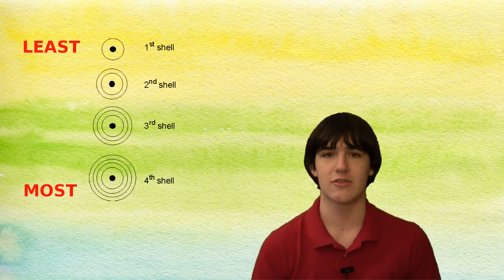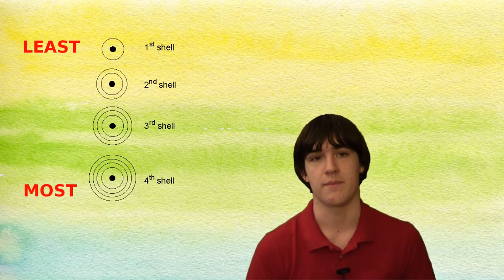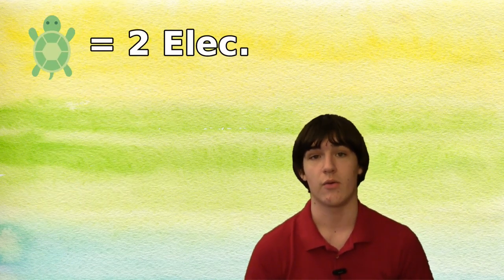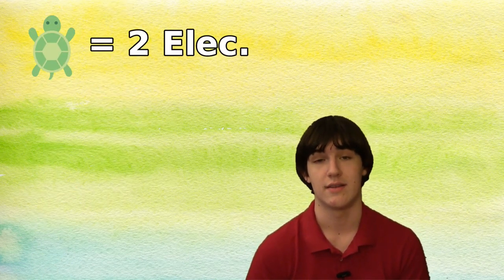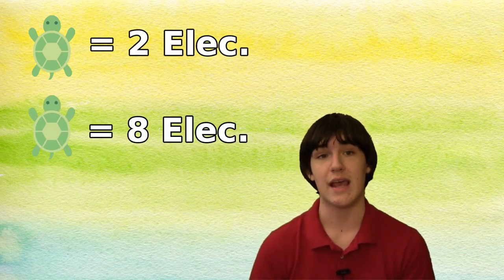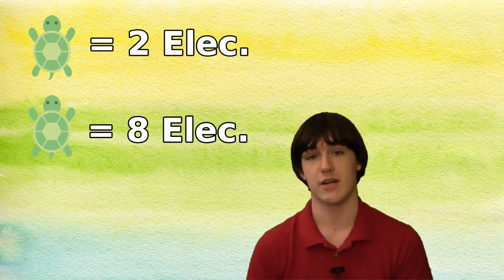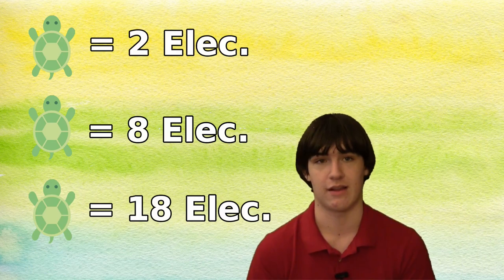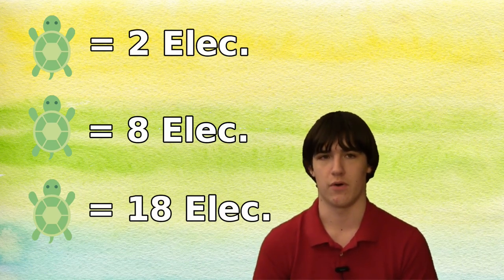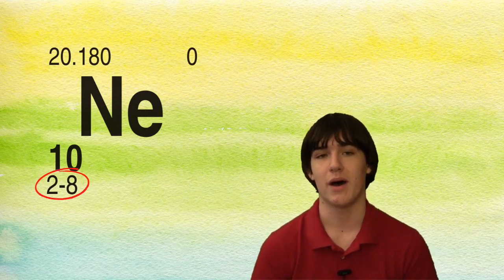Each shell that gets added has electrons that carry more energy. The first shell can only have two electrons. The second shell can have up to eight electrons. The third shell can have up to 18 electrons, and so on and so forth. This is represented in the notation you see on the bottom of the element on the periodic table.